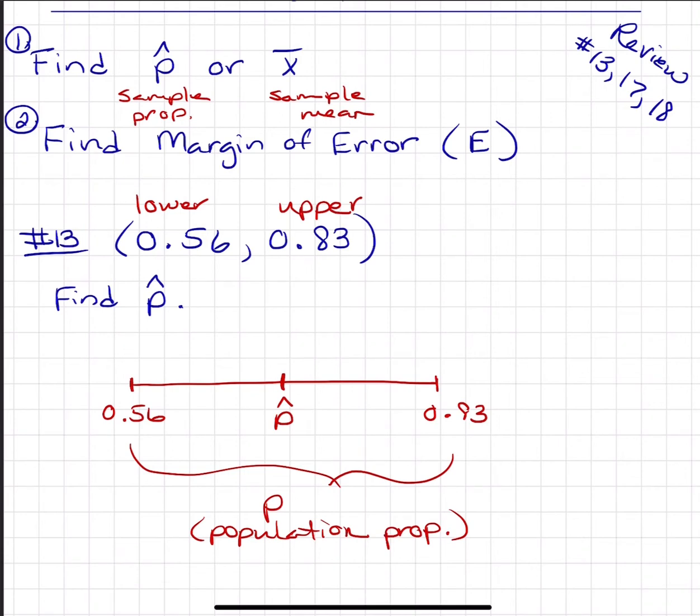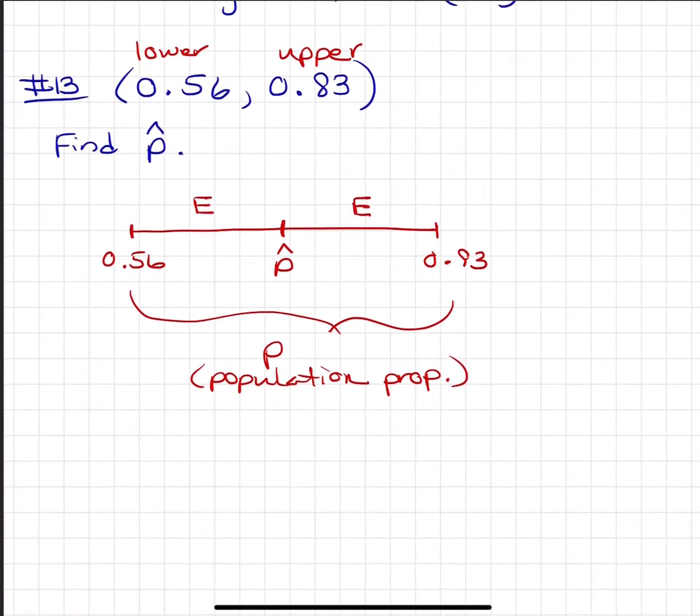What that means is your sample proportion is right in the center and you've got a margin of error that gives you the distance to each endpoint.